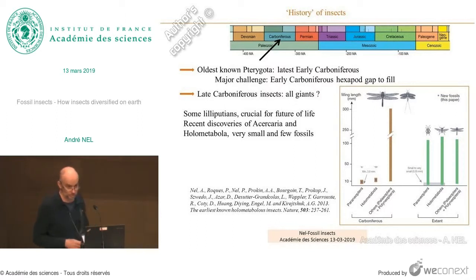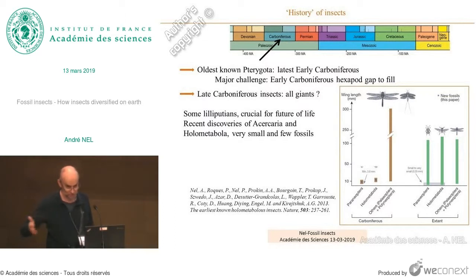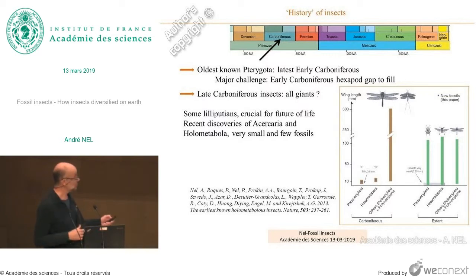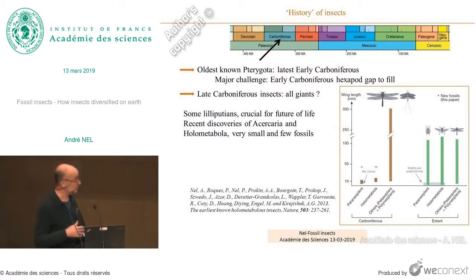We discovered very recently, in an outcrop from northern France — actually sediments removed from coal mines — that when we investigated this material, we found very small wings. We could see that Paraneoptera, that is cicada-like insects, and Holometabola — wasp-like, beetle-like, and mecoptera-like insects — were already present. But they are very few.